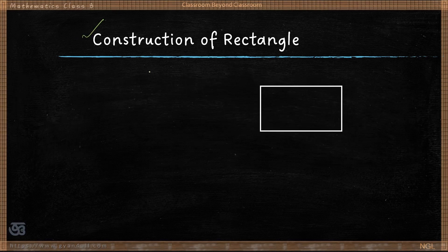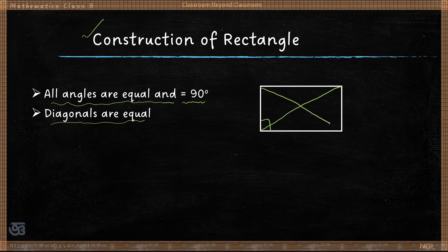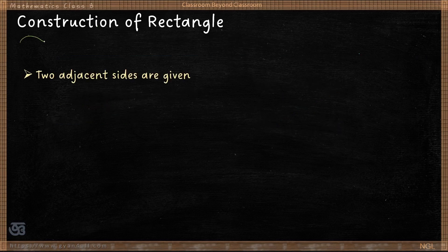Construction of rectangles. A rectangle is a special parallelogram — all the properties of a parallelogram are applicable to a rectangle. But there are two additional properties: all angles of a rectangle are equal and each angle is 90 degrees. Another important property is that the diagonals of a rectangle are equal, and they also bisect each other.